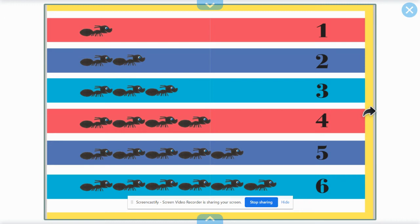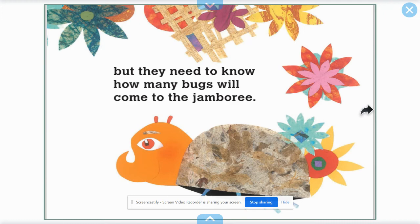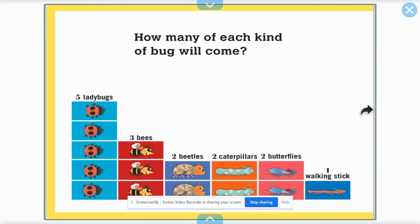One, two, three, four, five, six. The ants keep working. But they need to know how many bugs will come to the jamboree. How many of each kind of bug will come?